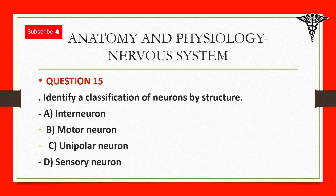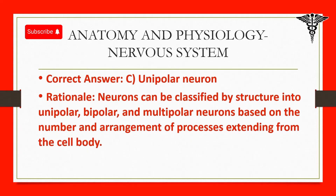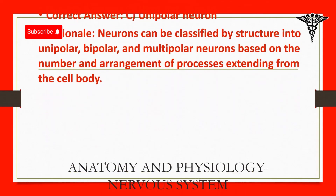Question 15: Identify a classification of neurons by structure. A. Interneuron. B. Motor neuron. C. Unipolar neuron. D. Sensory neuron. Correct answer: C. Unipolar neuron. Rationale: Neurons can be classified by structure into unipolar, bipolar, and multipolar neurons based on the number and arrangement of processes extending from the cell body.